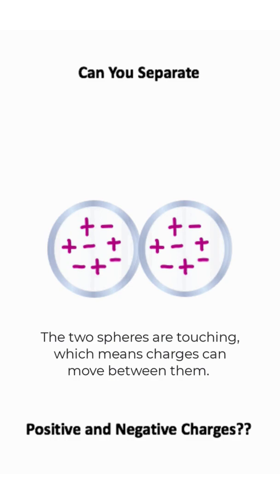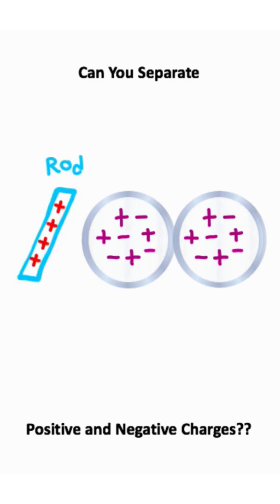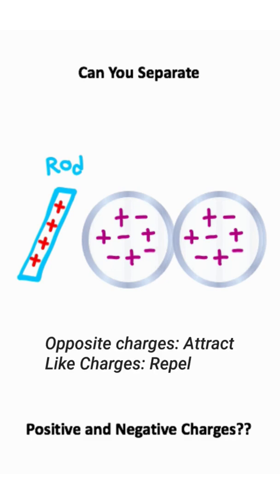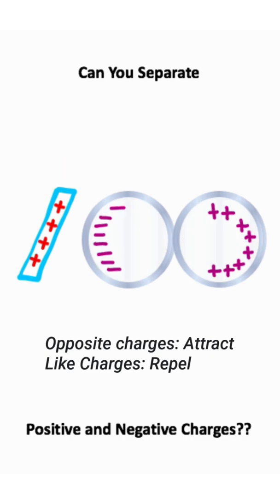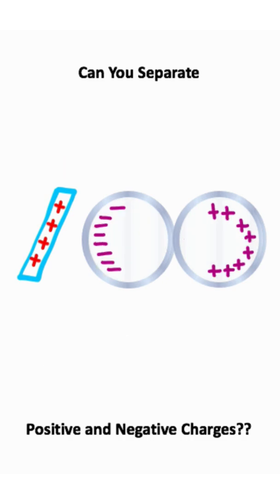A simple example of electrostatic induction is taking a rod with a positive charge and bringing it close to the two spheres without touching them. What do you think is going to happen? My hypothesis would be that all the negative charges would gravitate towards the rod and all the positive charges would be repelled away, and that actually is what happens.